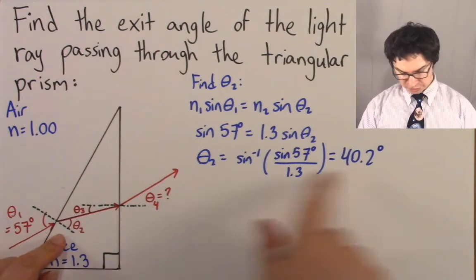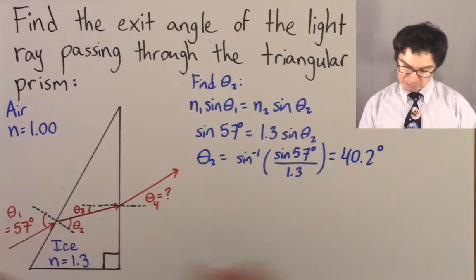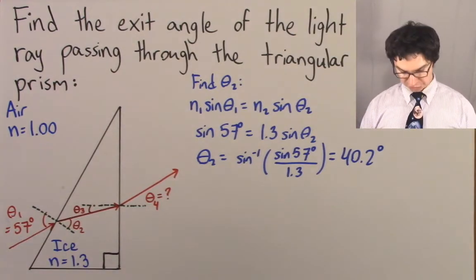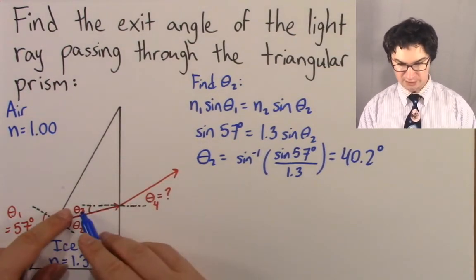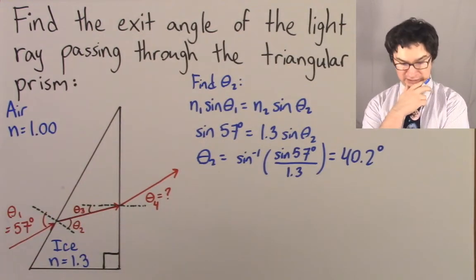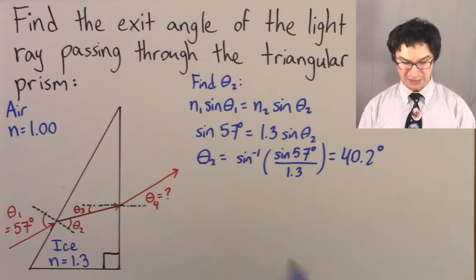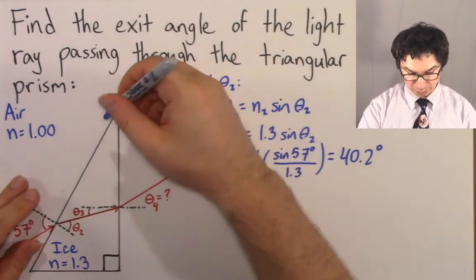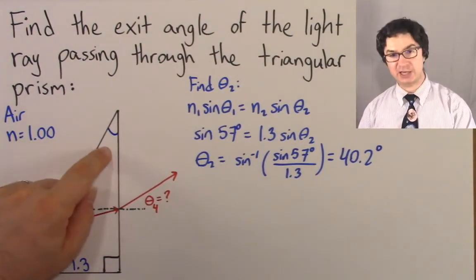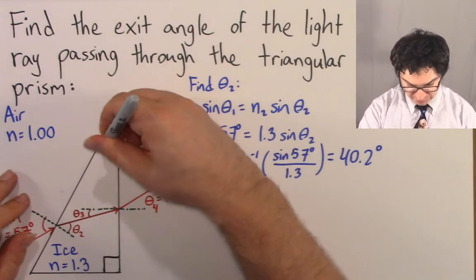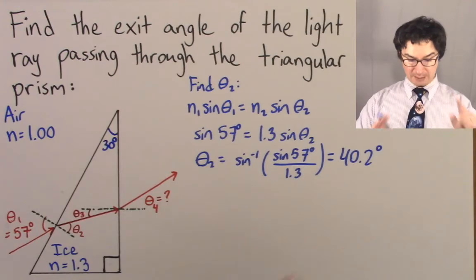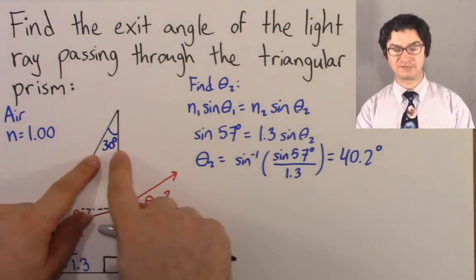We do a quick gut check and we see 40.2 applies to this angle here — yeah, it looks pretty good. So theta 2 is equal to 40.2 degrees. Now the question is, how can we use theta 2 to find theta 3? One thing to mention is that the problem has to give you one of the angles of the prism, and in this case this angle is given to us as 30 degrees. If this angle wasn't given to us, we could not solve the problem.